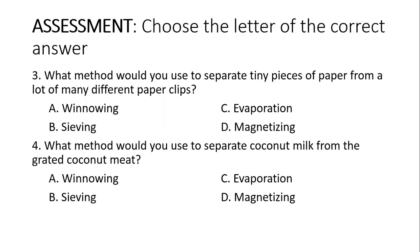Number 3: What method would you use to separate tiny pieces of paper from many different paper clips? A. Winnowing. B. Sieving. C. Evaporation. Or D. Magnetizing. Number 4: What method would you use to separate coconut milk from the grated coconut meat? A. Winnowing. B. Sieving. C. Evaporation. Or D. Magnetizing.